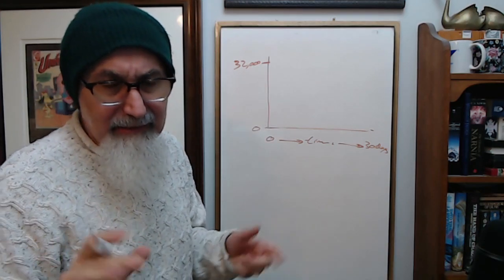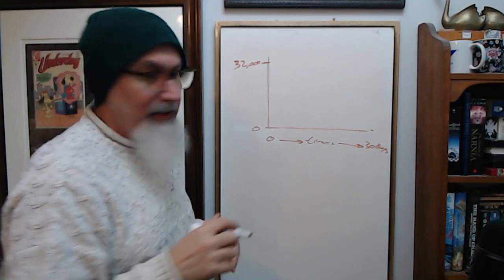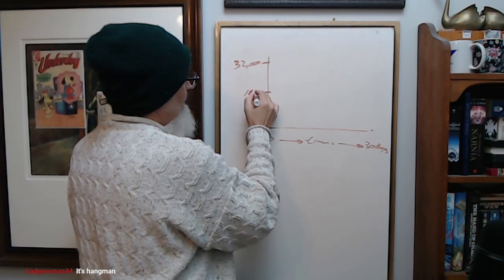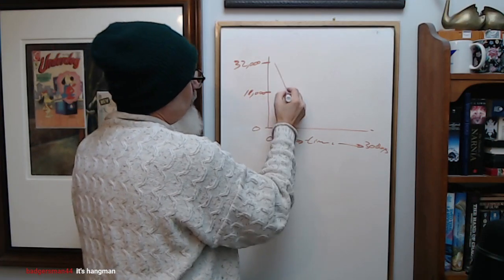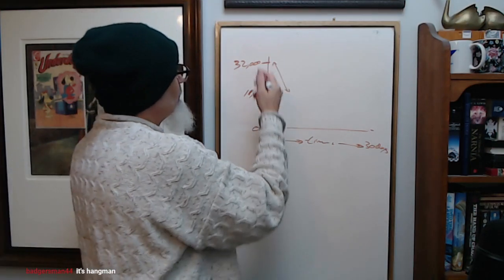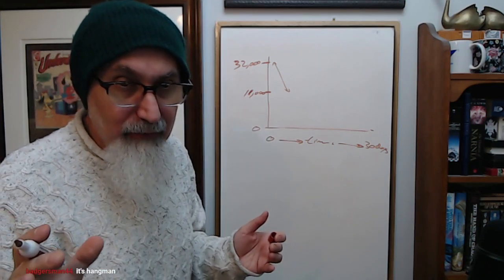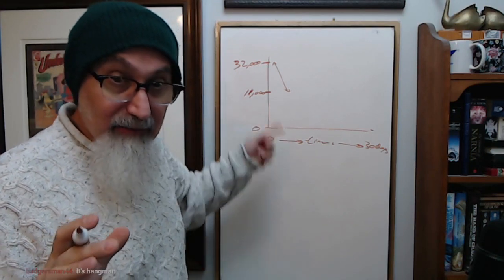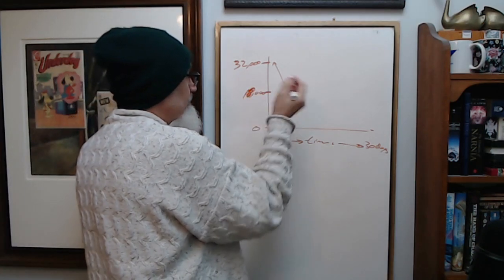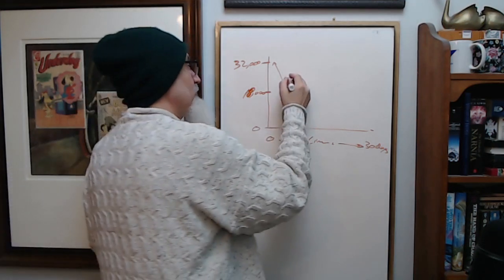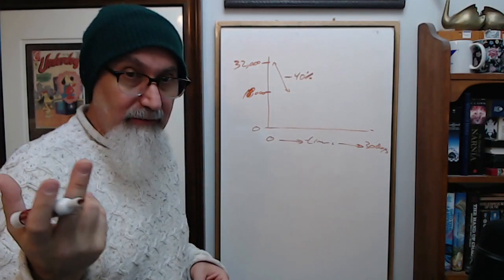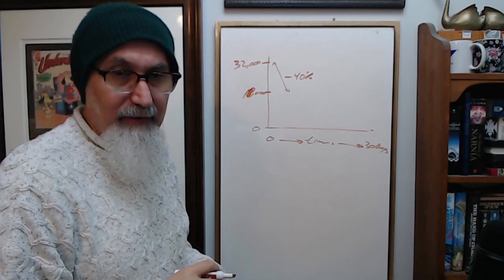In a matter of two weeks, even less than that, 10 days, the Dow Jones dropped down from 32,000 to 18,000. Just plummeted. So the Dow Jones lost almost 50% of its value. 16 would be 50%, so Dow Jones lost about 40%, let's say. Minus 40% in a matter of like two weeks. Straight down, nosedive.